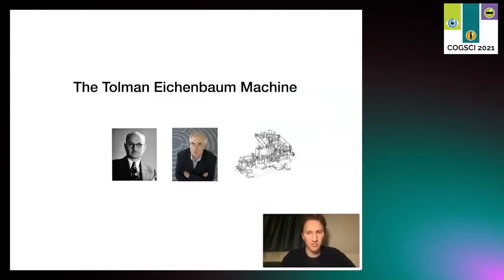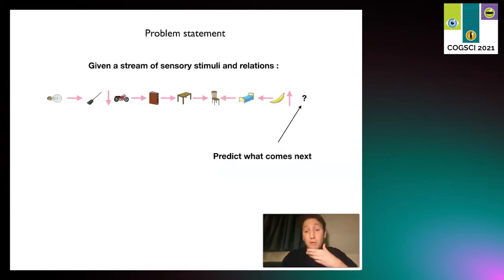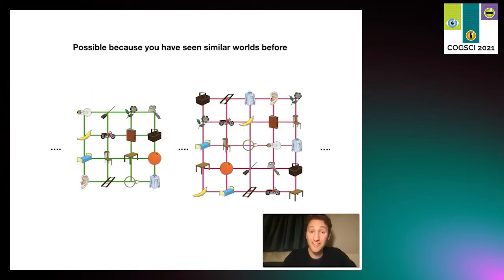That brings us to the Tolman-Eichenbaum machine, a machine that learns and generalizes this abstract relational knowledge. I'm not going to go through any details because I won't have time, but I'll try and show you that it at least works and give you a tiny bit of understanding. The problem we're going to charge this machine to solve is sensory predictions. If I give you a stream of sensory stimuli and associated actions - new light bulb, right, broom down, etc. - and then ask you to predict what comes next, that seems like a really hard problem.